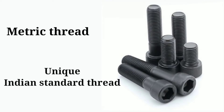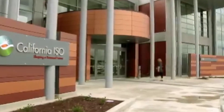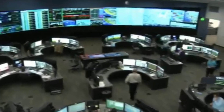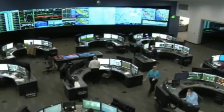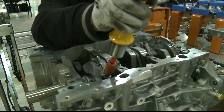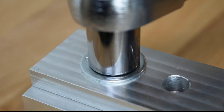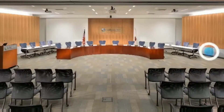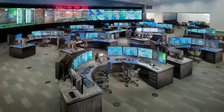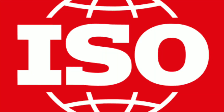ISO metric screw threads are the most commonly used type of general purpose screw threads worldwide. They were one of the first international standards when ISO, that is the International Organization for Standardization, was set up in 1947. The international standards of the ISO metric thread are published by the International Organization for Standardization.